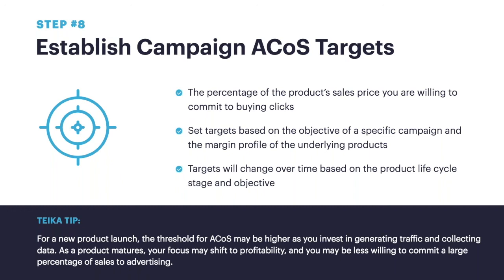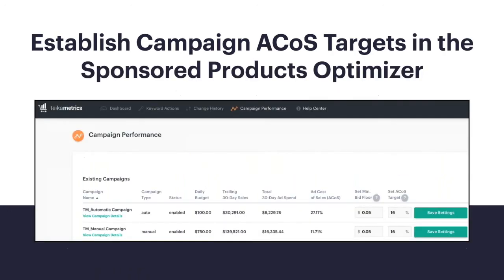Even if your ACOS is 50% in the short term while launching a product, the marketing spend may only account for 10% of total sales, so take a step back and consider that when looking at your ACOS. Targets are going to change over time — your new product won't be a new product forever, and you'll need to reach a profitable stage at some point. Being able to adjust those targets along with the product lifecycle stage is going to be really key. That's why we group campaigns by product type and objective, so you can have a single target at that level.